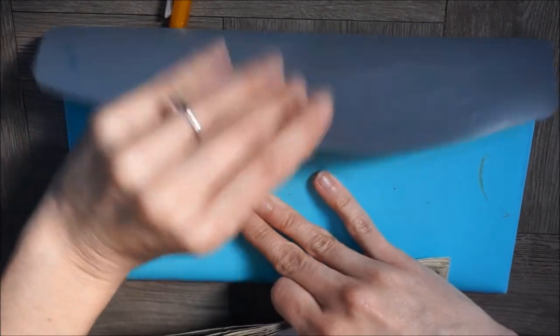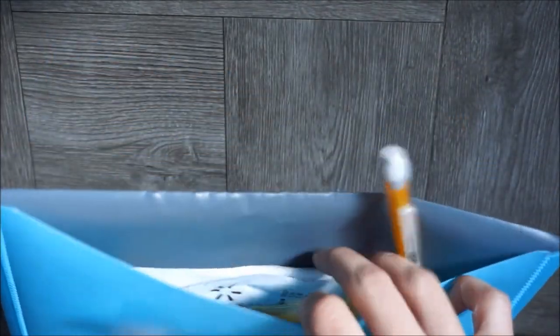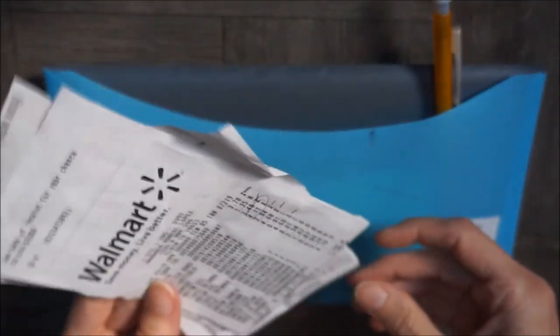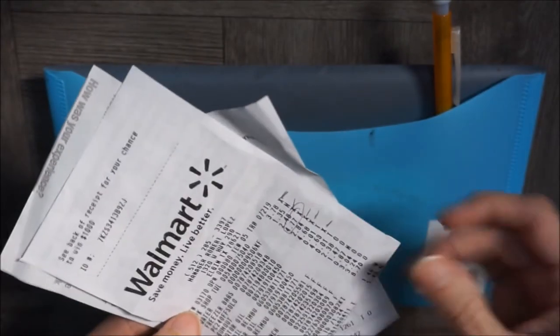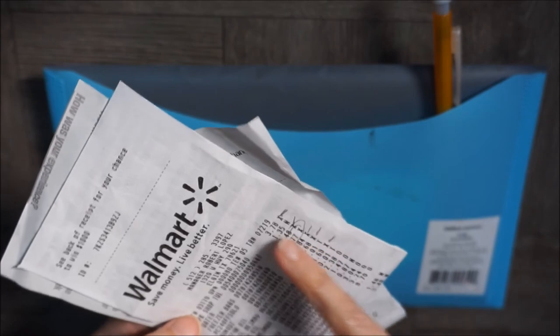And then any receipts that we have, I keep in the back here. So then I can go through, and if I did have a trip where I had a mismatch of items, for instance, this shopping trip, we had items that were considered household or car maintenance, diapers, and then groceries.